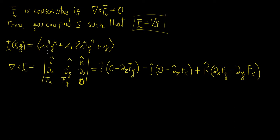This vector field only has two components, which implies that the third component — the z component — is always going to be zero. We calculate the curl by cross-multiplying the determinant. A further simplification happens because this is a function only of x and y, meaning that whenever we take a partial with respect to z, that's just going to be zero automatically, since there's no dependency on z.